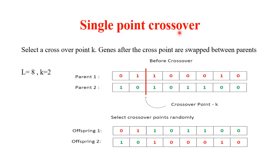In single-point crossover, as the name indicates, only one crossover point is used. Select a crossover point K; genes after that point are swapped. For example, with two parents each having chromosome length 8 and crossover point K=2, offspring 1 contains bits 0, 1 from parent 1 and the remaining genes from parent 2.